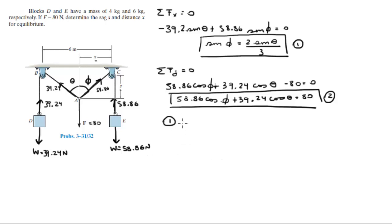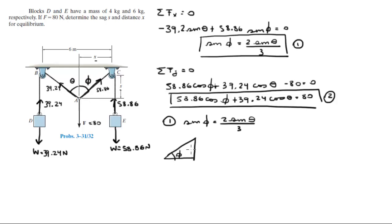In equation 1 we said sine of phi equals 2 sine of theta over 3. A way to solve these problems is to build an imaginary triangle — this triangle is not the physical triangles in the problem. So let's say we have angle phi. Two different triangles can share the same angle with different arm lengths.